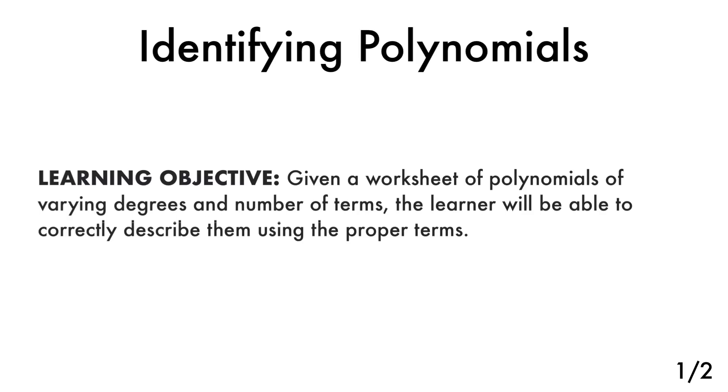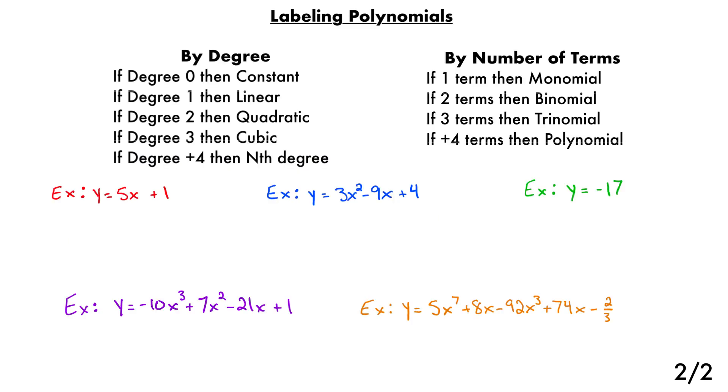In this lesson, we're going to be identifying polynomials by their proper names. On the screen in front of you, I have the different ways that we label polynomials based upon the degree of the polynomial. That is to say, if you look at the equation and you find the x with the highest power, whatever that power is, that's the highest degree. And then also by the number of terms. That's how many pieces the equation is comprised of. I've got about five examples for us to work through.